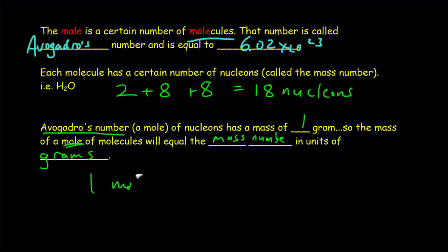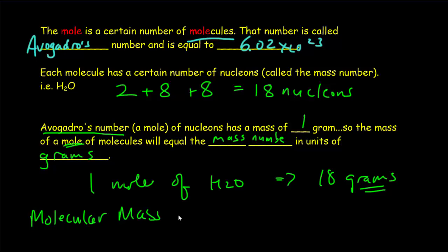So, one mole of H2O has a mass of 18 grams. That is to say, if we have a molecular mass of 18 nucleons, then we're going to have a molar mass of 18 grams.